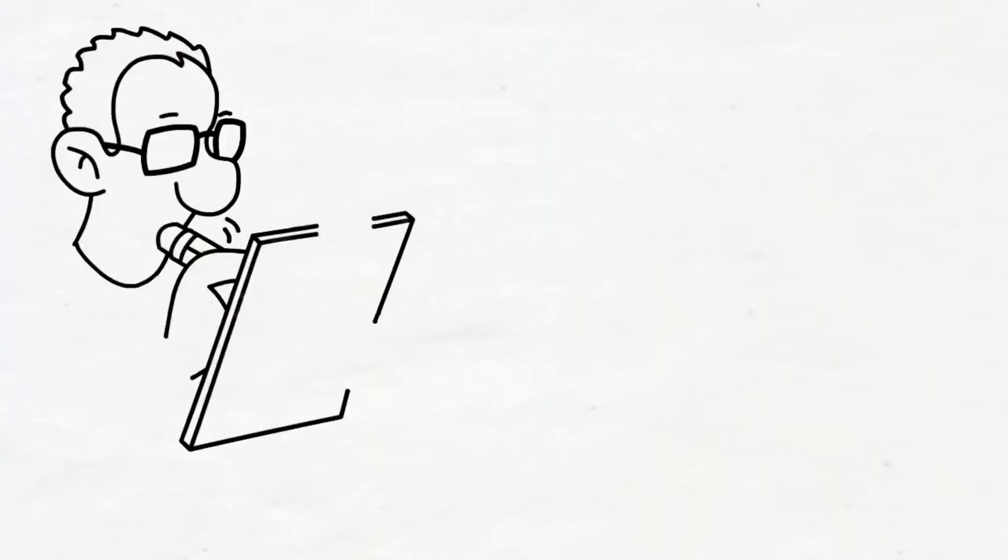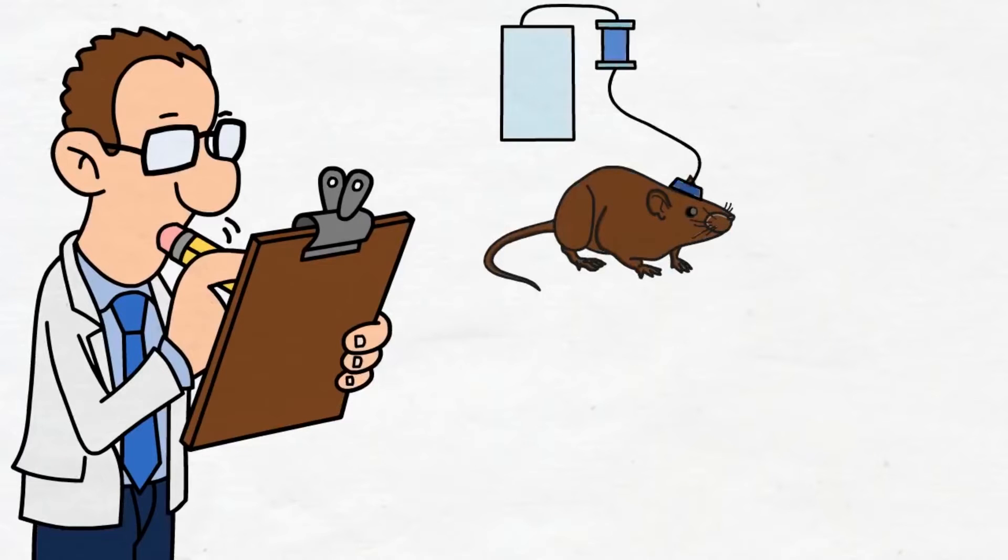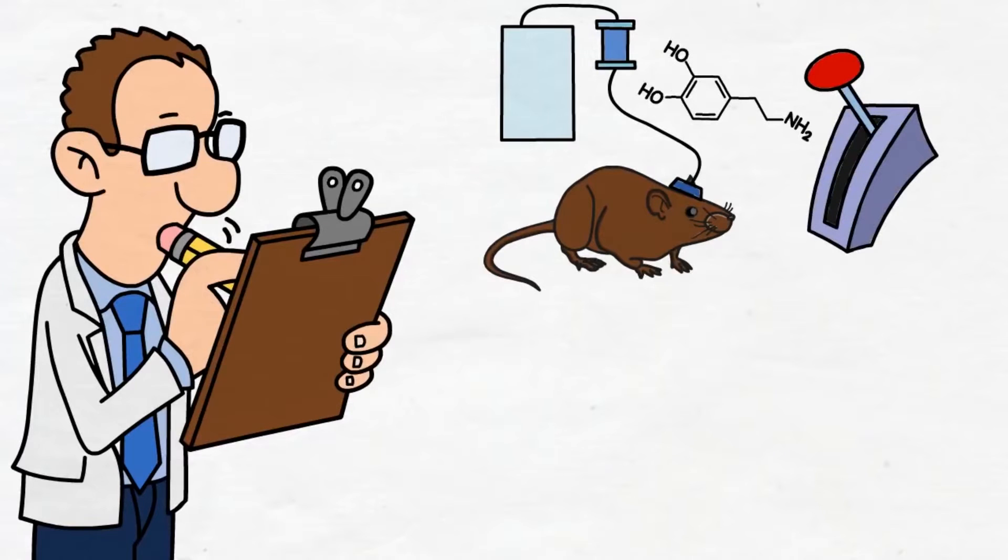If you're not sure how powerful dopamine is, let me introduce you to a few experiments neuroscientists did on rats. The researchers implanted electrodes in the brains of rats. Whenever the rat pulled a lever, the researchers stimulated the rat's reward system in the brain. The result was that the rats developed a craving so strong they kept pulling the lever over and over for hours.